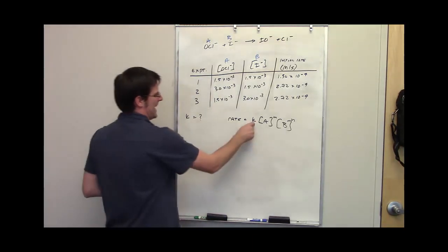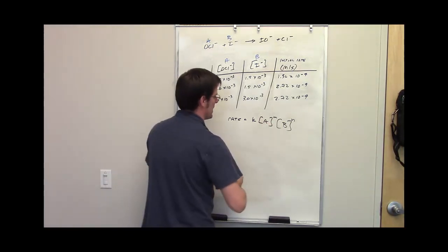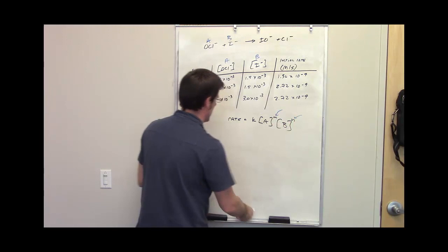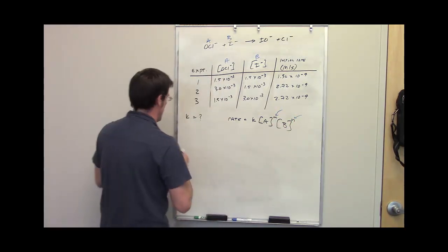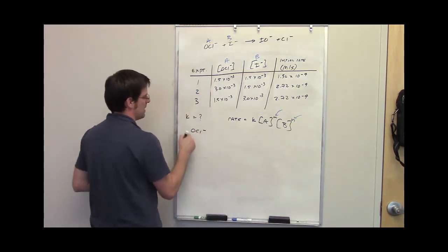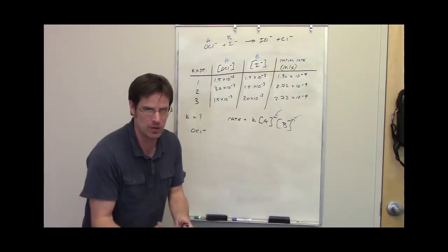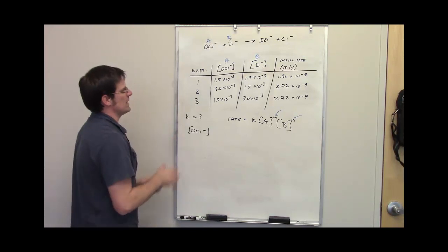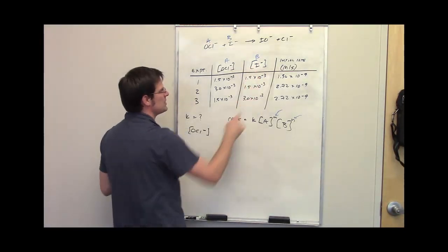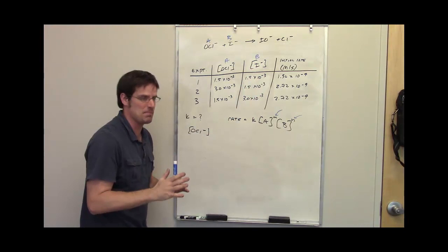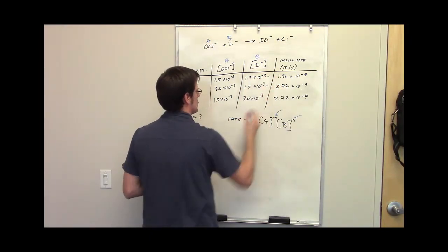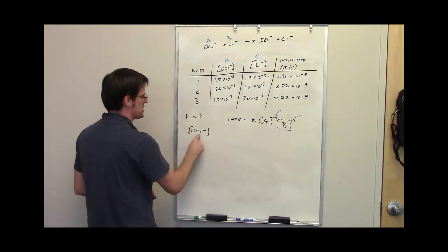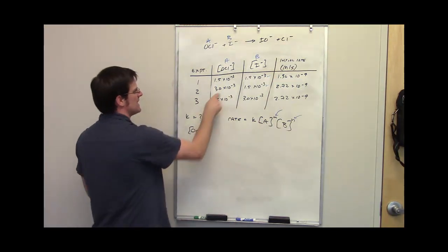So to determine k, we have to identify these exponents m and n. How do we do that? We do that individually. Let's begin with component A. I'm going to write down the hypochlorite anion, which is the active ingredient in bleach. I'm going to focus on the experiments where component B's concentration was kept the same - experiments 1 and 2 - to see how changing the concentration of A changes the rate.